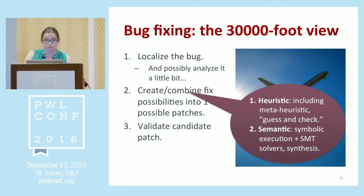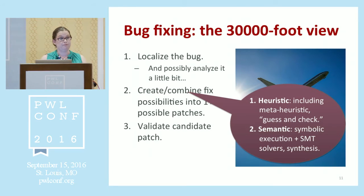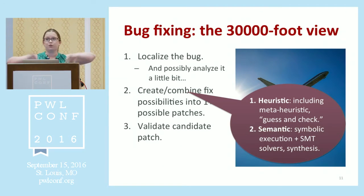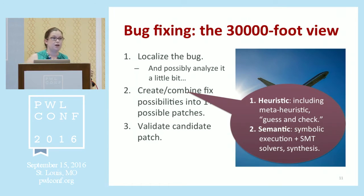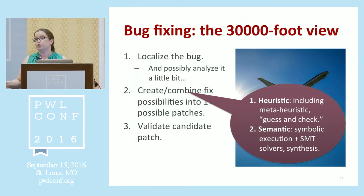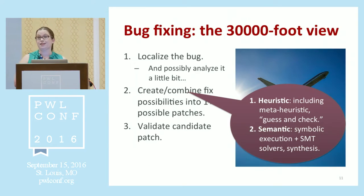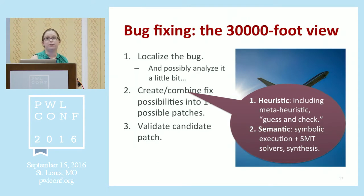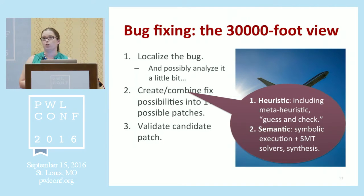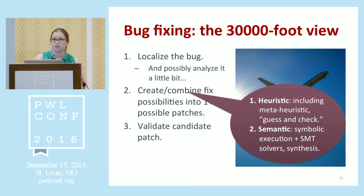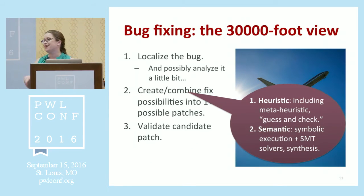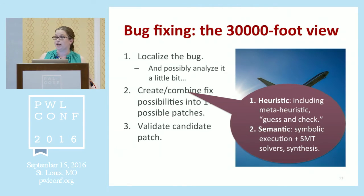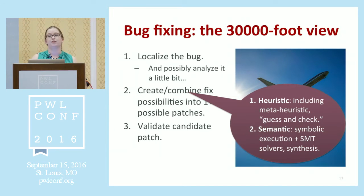The real variation is in the second step — where we come up with different ways to try and change the program. From 10,000 feet, the techniques split into two conceptual threads. The first two papers I listed are a prototypical approach from each of those threads. The first set of techniques are what we call heuristic — also referred to as generate-and-validate or guess-and-check approaches. They use typically syntactic templates applied to the program, generate a whole bunch of possibilities, and see if they work. The second set uses symbolic reasoning — symbolic execution and theorem provers — to construct code that has certain properties to fix a bug.